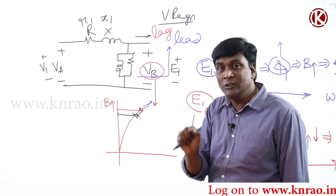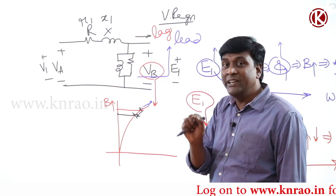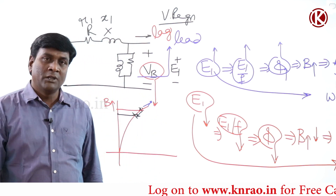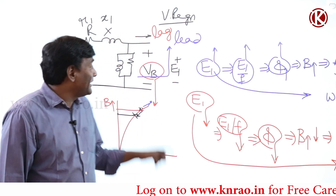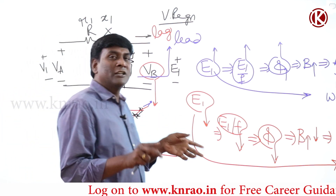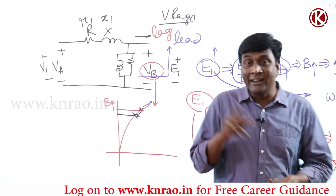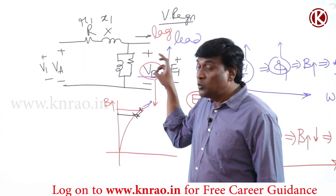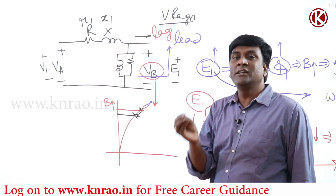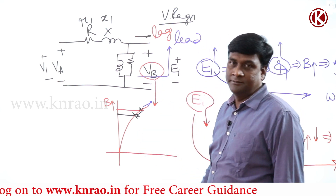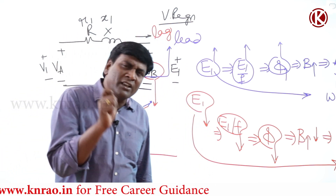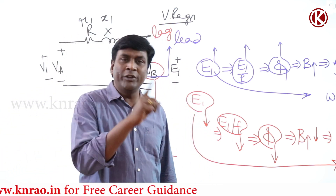By not considering those voltage variations, R0 and X0 values are taken as constant. By not considering those voltage variations, the operating flux of the transformer is taken as constant. By not considering those voltage variations, the core loss of the transformer — hysteresis loss and eddy current loss — is taken as constant. To be precise, they are going to vary for sure.